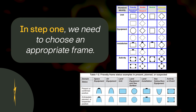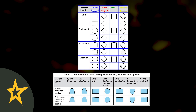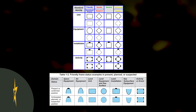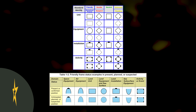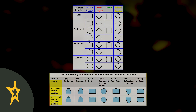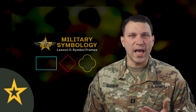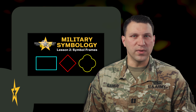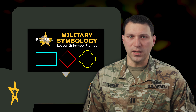In step 1, we need to choose an appropriate frame. You want to make sure you have the right standard identity, physical domain, and status. If you need more information about what each of those mean or how to pick the right symbol frame, we have an in-depth video in the link provided.